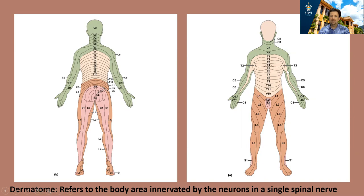For example, nerve T4 is generally associated with the area around the nipple. Nerve T10 is generally associated with the area around the umbilicus. Nerve S1 is generally associated with the inner part of the leg and the big toe. So if you're doing sensory testing and find a loss of sensation in the big toe area, you could say there's probably something going on with your L5 nerve.